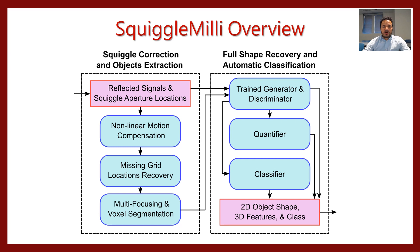This is where we design our system to solve all the challenges. On the left side, we first apply non-linear motion compensation to compensate for non-linear motion. Then we apply a compensation technique to recover the missing samples. After that, we segment each object if there are multiple present in the Millimeter Wave. We then generate the Millimeter Wave image and supply it to the generator and discriminator, which produces a high-quality 2D shape. This 2D shape is supplied to the quantifier and classifier to predict 3D features and the object class. In total, we start with reflected signals and the swept aperture locations and finally achieve 2D object shape, 3D features, and class.